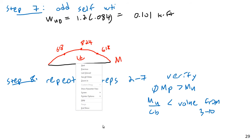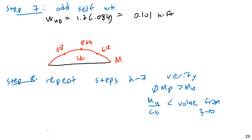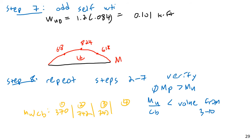If we calculate M_ultimate over C_b for each segment including self-weight, we get 370, 742, 742, and 370 kip-feet. Looking at Table 3-10 for our W24x84 at LB = 10 feet, the capacity is approximately 765 kip-feet at C_b = 1.0, which is above our 742 requirement. No problem there.